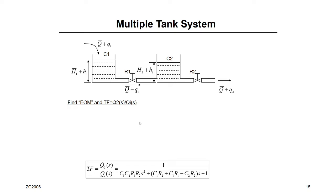Today we're going to solve a typical problem that you see in fluid systems. This is a steady state problem with a small deviation around the steady state. Most of the problems that you will see in the book, in the homework, in the field — most of them are a kind of steady state problem. It's at steady state, then the dynamic system starts when there is a small deviation around the steady state.